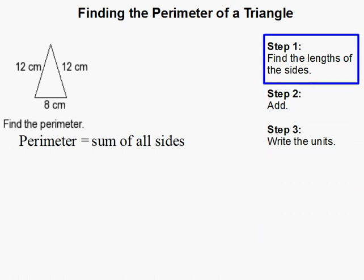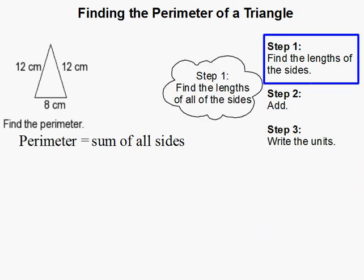How to find the perimeter of a triangle? It's actually very simple. All we have to do is find the lengths of all the sides of the triangle, and when they're given it makes it even easier.